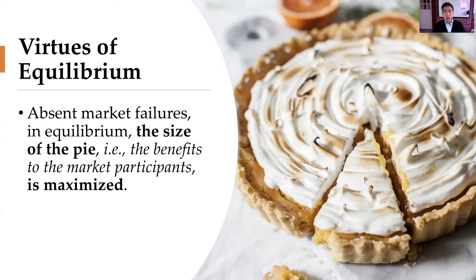Getting to the punchline: the virtue of an equilibrium is that absent market failures, the size of the pie — the benefits to the market participants — is maximized. There are two groups, buyers and sellers, and we care about how both of them are doing because we need both their participation for there to be well-functioning markets. That benefit to them is maximized at that combination where price and quantity intersect.